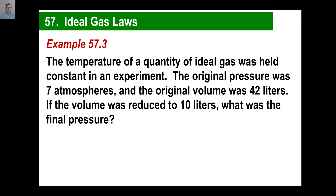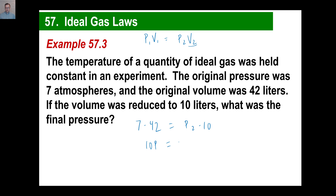Let's try one more. The temperature of a quantity of ideal gas was held constant, so we will not have any temperature at all — equation is just P sub 1 times V sub 1 equals P sub 2 times V sub 2. Original pressure: 7 atmospheres. Original volume: 42 liters. If the volume was reduced to 10 liters, what was the final pressure? 7 times 42 is 294, and dividing by 10 just moves the decimal, giving a pressure of 29.4.